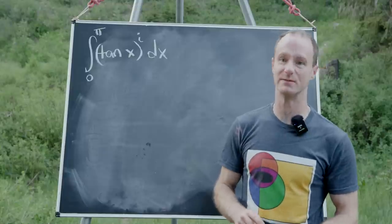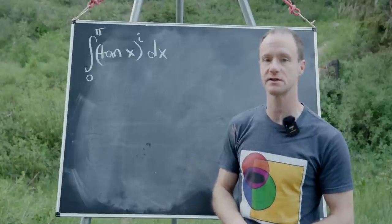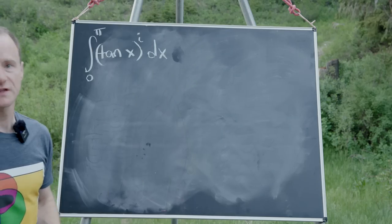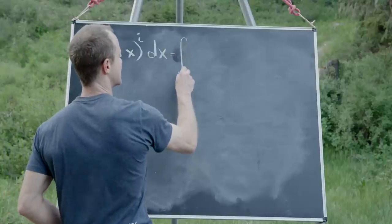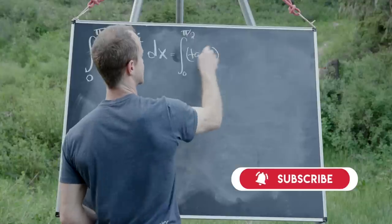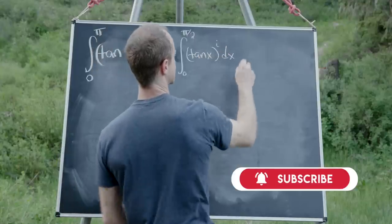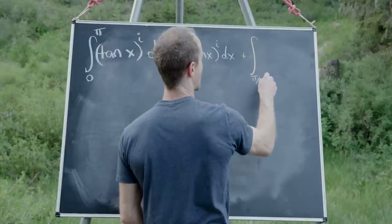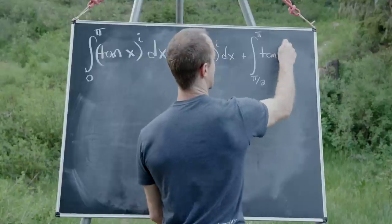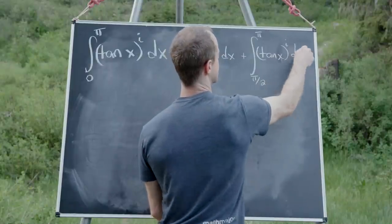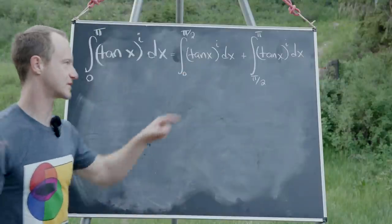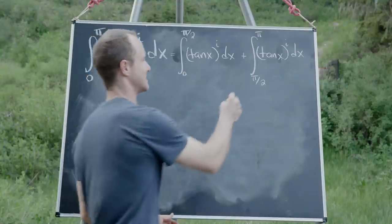With all the work that we did before, this is actually quite easy because we can just apply that previous result. The first thing we'll do is split this into two pieces: the integral from 0 to π/2 of tangent x to the i-th power dx, plus the integral from π/2 to π of the same thing. We've already calculated this first integral, so now we just need to focus on the second integral.